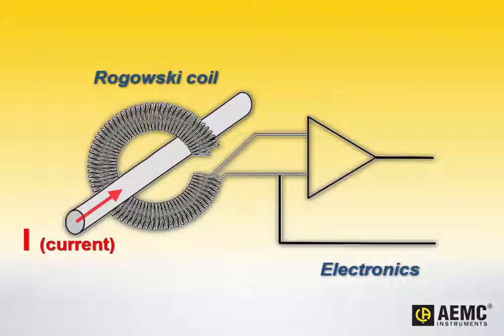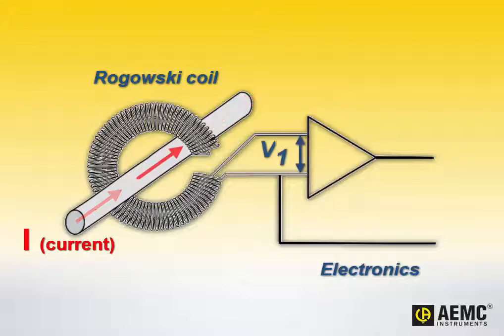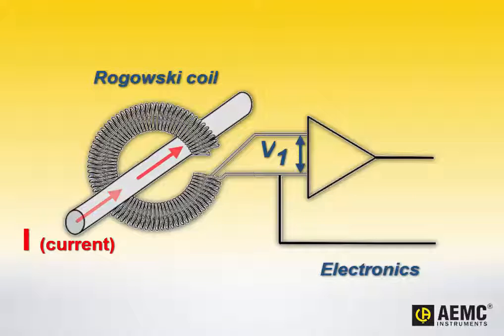As current flows through the conductor, it induces a voltage, called V1, within the coil. V1 varies in proportion to two values: the amount of current in the conductor, and the AC frequency of the current.